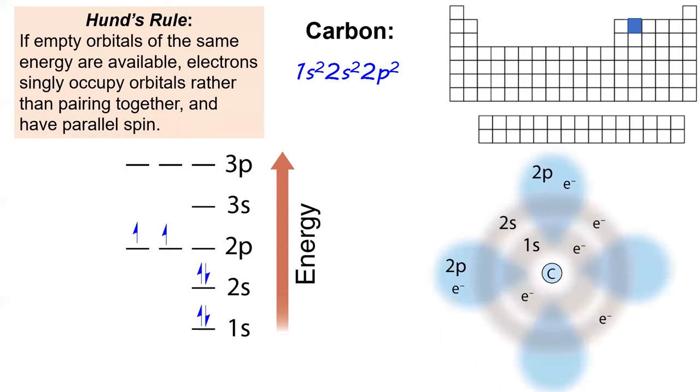If you count up the superscripts in the electron configuration, you'll get the total number of electrons in the atom. Sixth up, and my personal favorite, carbon. The sixth electron that moves in follows something called Hund's rule. Hund's rule states that electrons prefer to have their own orbital if one is available at the same energy level.